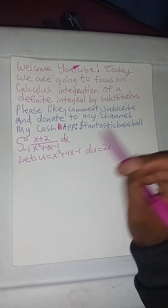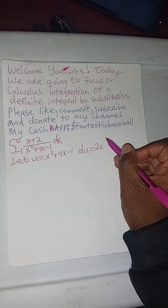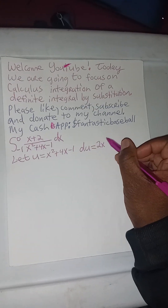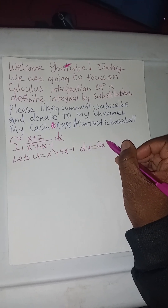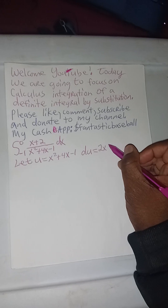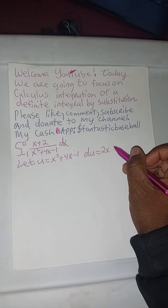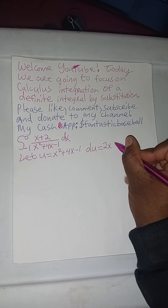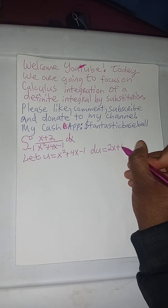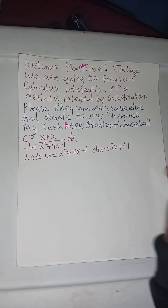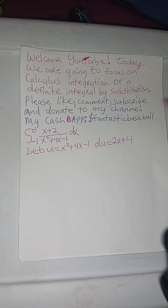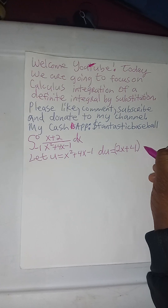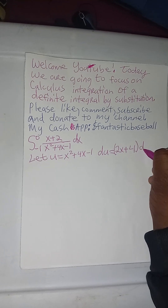1 times 2 is 2, and then subtract 1 from the exponent to obtain the power of 1. Then the derivative of 4x will be 4. Put parentheses around this, and then dx.